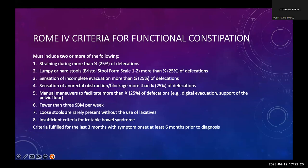ROME IV criteria for functional constipation require two or more of: straining during more than 25% of defecations; lumpy or hard stools in more than one-fourth of defecations; sensation of incomplete evacuation; sensation of anorectal obstruction or blockage; requirement of manual maneuvers to facilitate defecation; or fewer than three spontaneous bowel movements per week. Loose stools are rarely present without laxatives. Criteria should be fulfilled for the last three months with symptom onset at least six months prior to diagnosis.